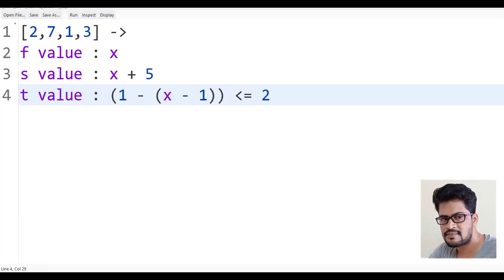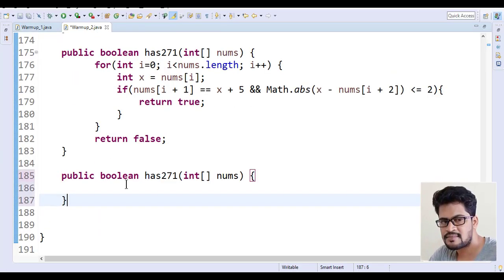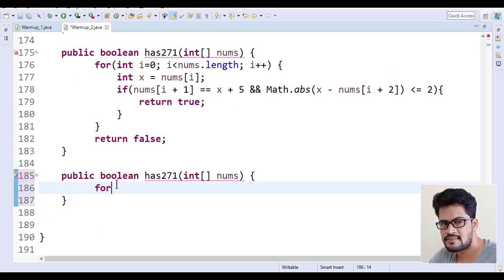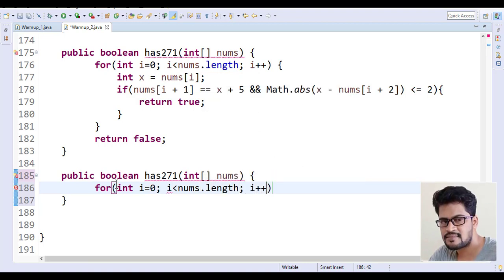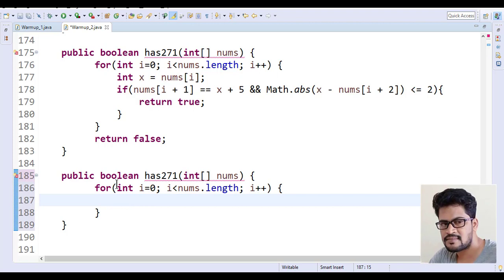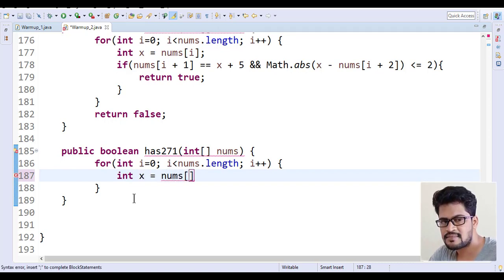Yeah, let me copy this and paste. So let me loop it first: for int i equal to 0, i less than nums dot length, i plus plus. In this you have to check. Let me take int x equals nums of i. I am assuming that the first index position value will be x.